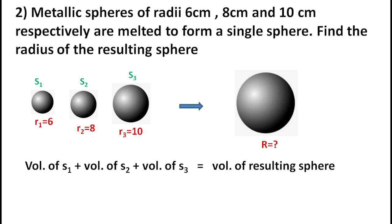Using the volume formula: 4/3 π r1³ + 4/3 π r2³ + 4/3 π r3³ = 4/3 π R³. Taking 4/3 π as common: 4/3 π (r1³ + r2³ + r3³). With r1 = 6, r2 = 8, r3 = 10: that is 4/3 π (6³ + 8³ + 10³), and the right side of the resulting sphere is 4/3 π R³.